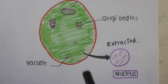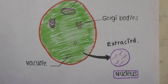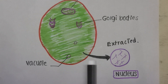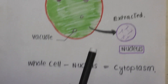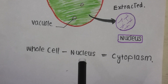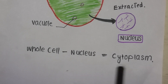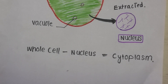If I subtract only the nucleus from the cell, the part left is known as cytoplasm. If you want to remember it throughout your life, remember this equation: if I subtract nucleus from the whole cell, the part left is known as cytoplasm. Thank you for watching this video.